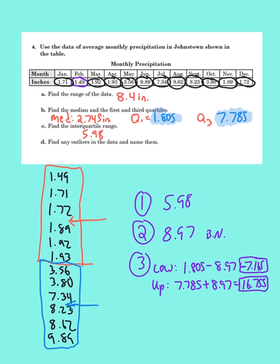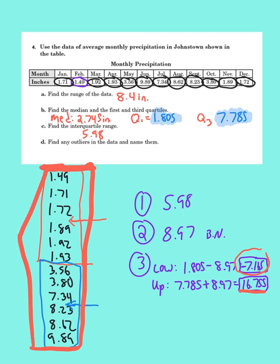So now I'm going to go up and I'm going to draw my house. I'll have to do it sideways on here since I wrote my numbers up and down. Now my lower boundary is a negative number. So that means there's no outlier below 1.49. My upper boundary is 16.755, which would be way down here. So if I draw my house, it's going to be a sideways house. You'll notice there are no numbers outside of my house. So for D, we did all that work to find out that there are no outliers.